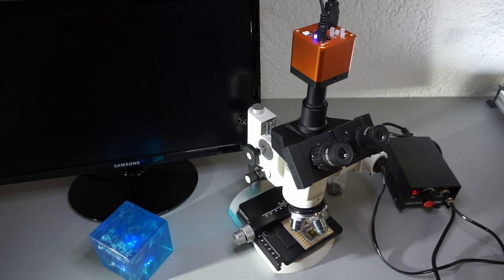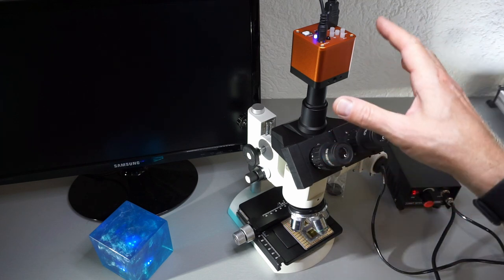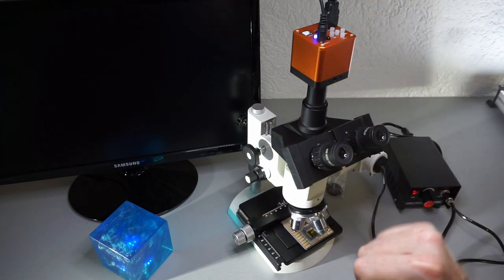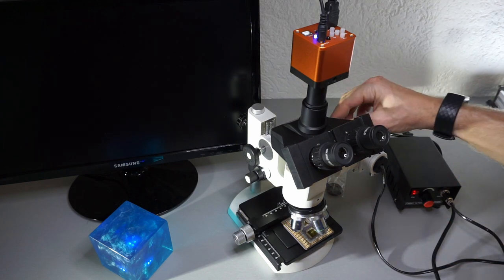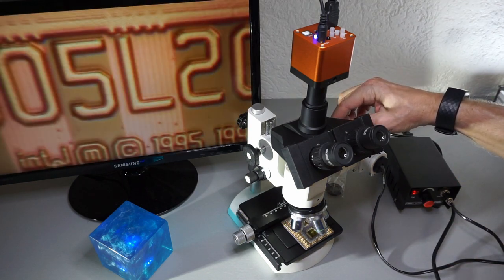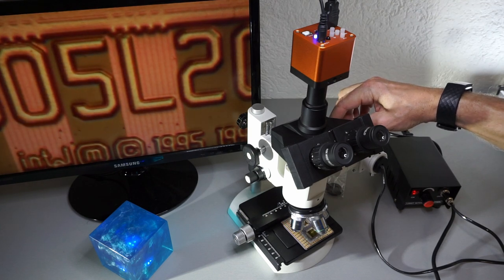The setup is ready. I have attached also a screen to the camera. The Pentium Pro is installed. We are looking at a certain segment, we are looking at the second level cache. For some reason I have no picture, but I think it's because the light source is not there.